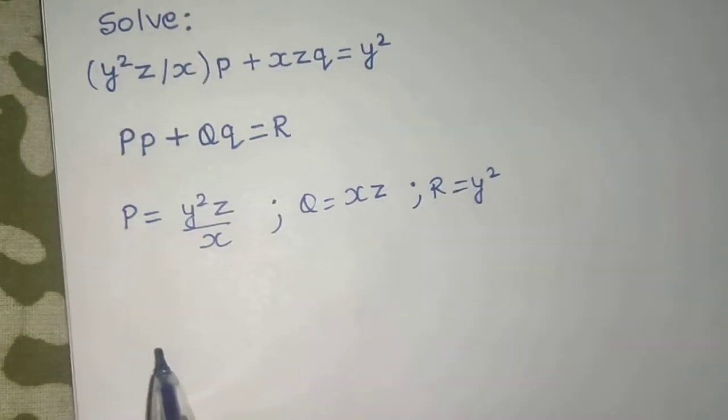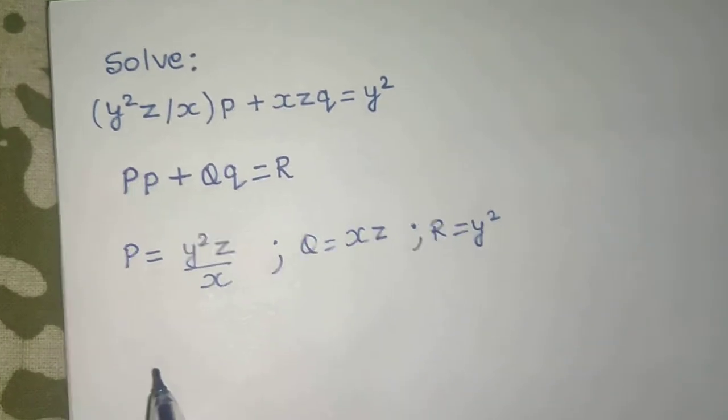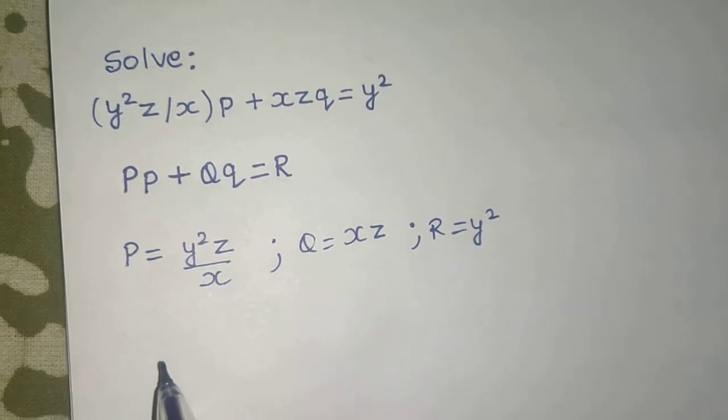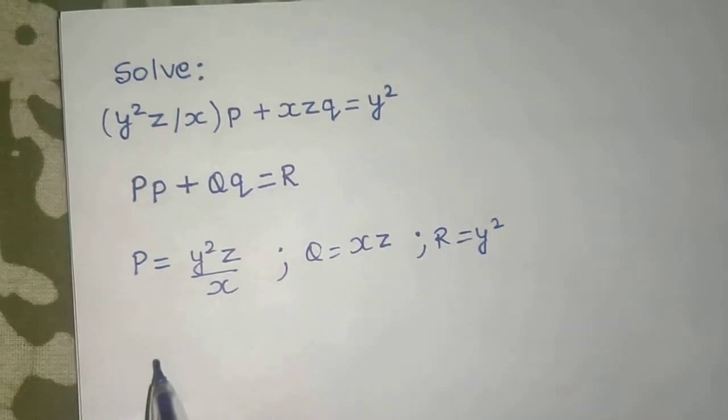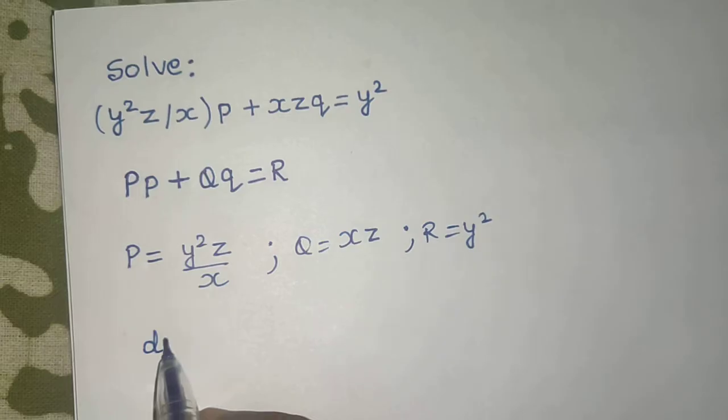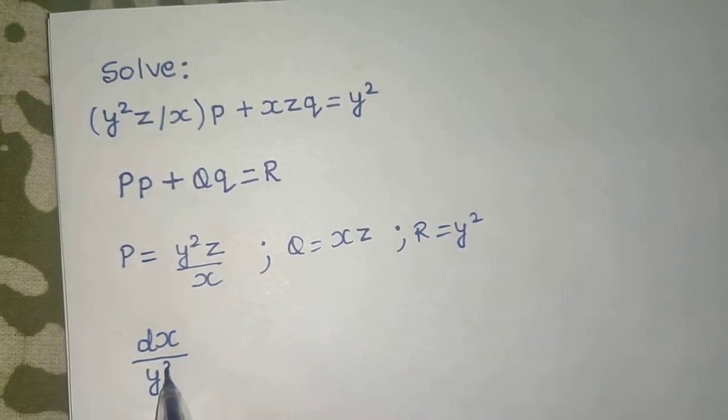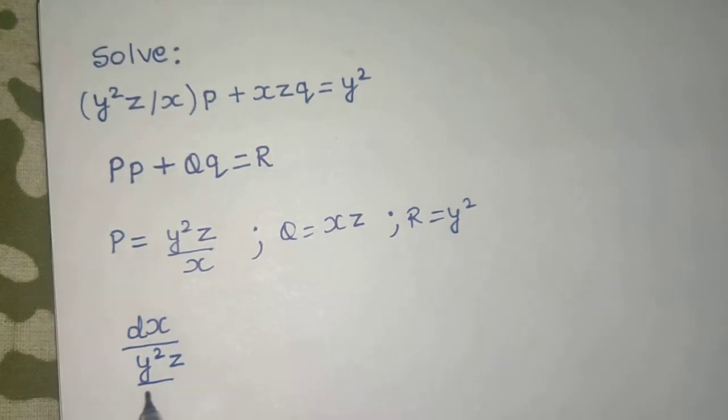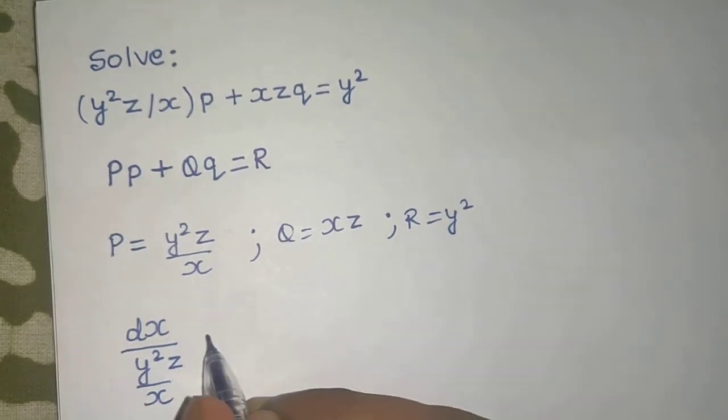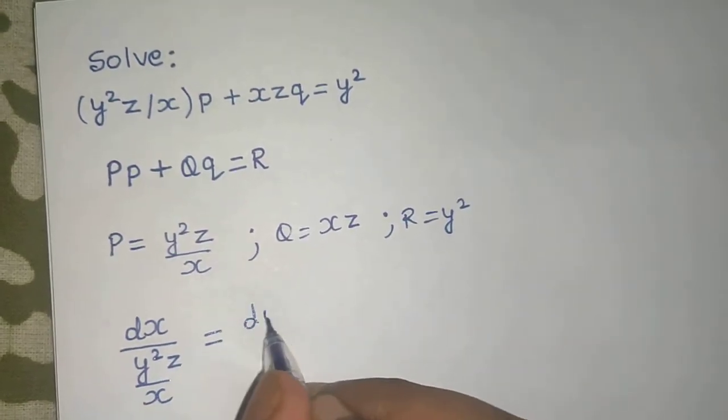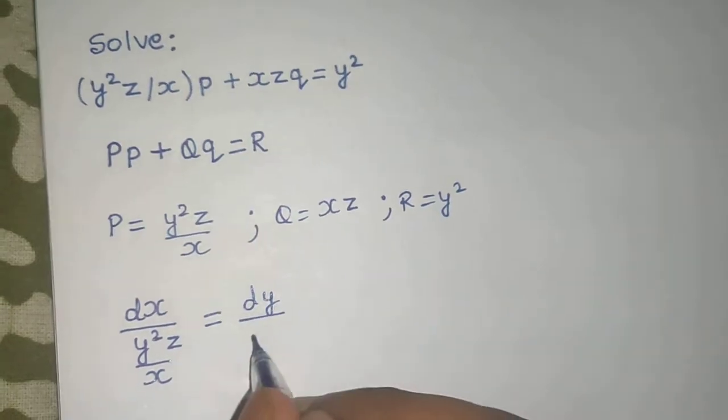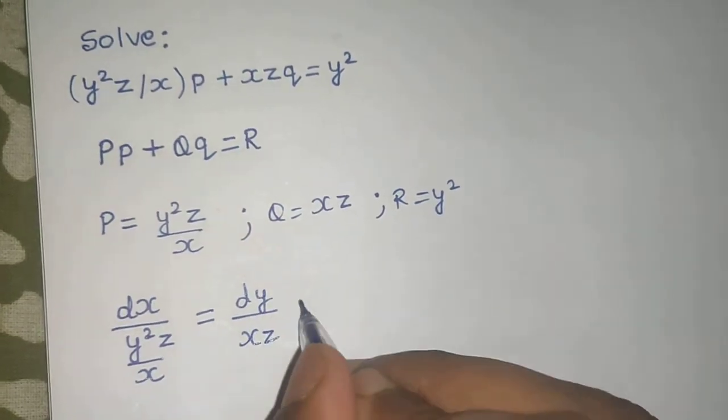What is the second step? Second step is to find the Lagrange's auxiliary equation which is dx divided by capital P. So dx divided by y square z by x equals to dy divided by capital Q which is xz equals to dz divided by capital R which is y square.